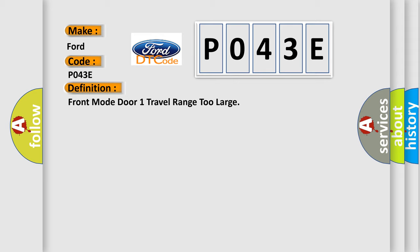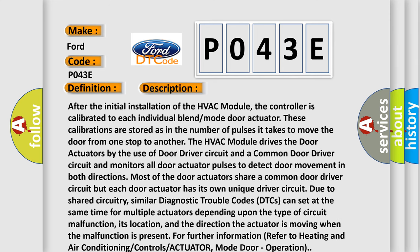Here is a short description of this DTC code. After the initial installation of the HVAC module, the controller is calibrated to each individual blend mode door actuator. These calibrations are stored as the number of pulses it takes to move the door from one stop to another. The HVAC module drives the door actuators by use of a door driver circuit and a common door driver circuit, and monitors all door actuator pulses to detect door movement in both directions. Most door actuators share a common door driver circuit, but each door actuator has its own unique driver circuit. Due to shared circuitry, similar DTCs can set at the same time for multiple actuators depending upon the type of circuit malfunction, its location, and the direction the actuator is moving when the malfunction is present. For further information, refer to heating and air conditioning controls actuator mode door operation. This diagnostic error occurs most often in these cases.